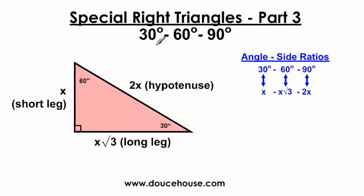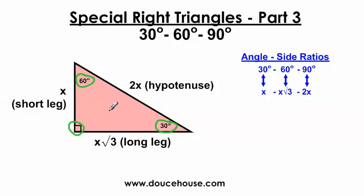Now when I say 30-60-90 special right triangles, remember I'm talking about the angle measures. Every 30-60-90 triangle has a 30-degree angle, a 60-degree angle, and a 90-degree angle. That's why it's called a 30-60-90 triangle. If you come across a triangle that does not have all three of these at once, then you can't do what I'm talking about in today's lesson.